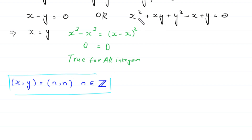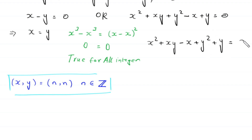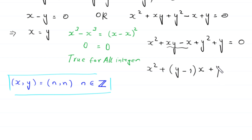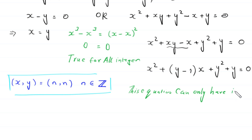Now we consider the second case. We rearrange these terms: x squared plus xy minus x plus y squared plus y is equal to 0. This is a quadratic equation in terms of x, and the discriminant b squared minus 4ac can only yield integer solutions if the discriminant is a perfect square.